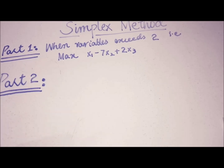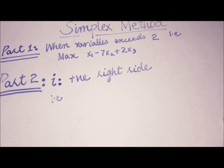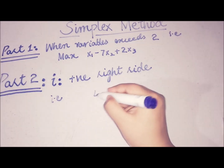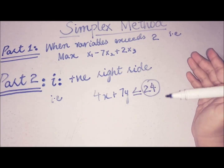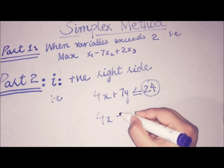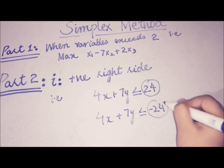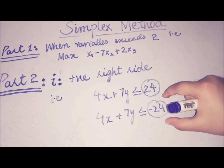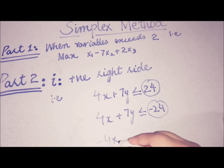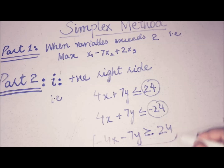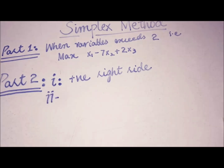The simplex model has two main conditions. The first condition is that all constraints must have no negative right-hand side. For example, a constraint of the type 4x plus 7y less than or equal to 24 has a positive right-hand side — that's required. If the right-hand side were minus 24, we must multiply through by negative one, which also flips the inequality sign, to make it positive before applying the simplex method.